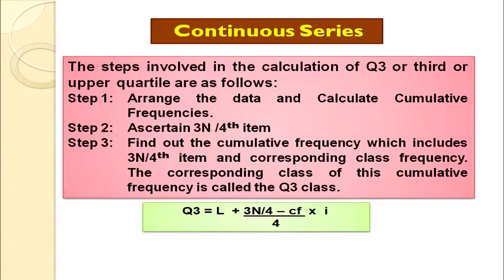For Q3, the steps are similar. Arrange the data and find cumulative frequencies. Then find 3n/4th item. Locate this in the cumulative frequency; the corresponding class is Q3 class. Apply the formula: Q3 = L + [(3n/4 − Cf) / f] × I, where Cf is the preceding class cumulative frequency and I is the class interval gap.